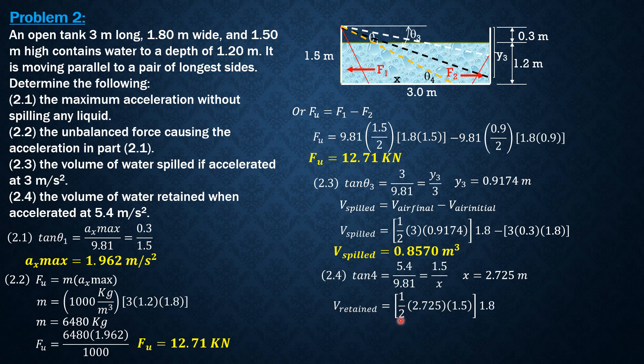So volume retained in the tank equals 1 half of X times 1.5 times 1.8 perpendicular to the board. 1 half of 2.725 times 1.5, that's the area of this triangle, times 1.8 meters. Volume retained equals 3.679 cubic meters. That's all for this problem.